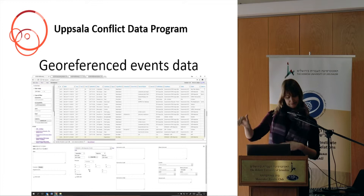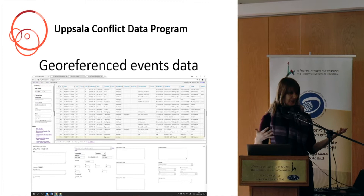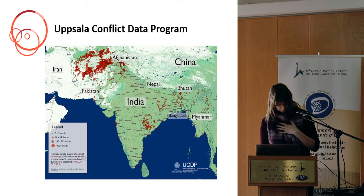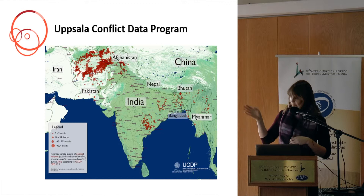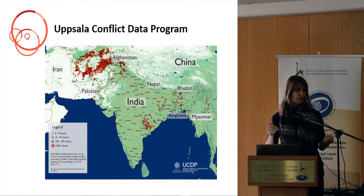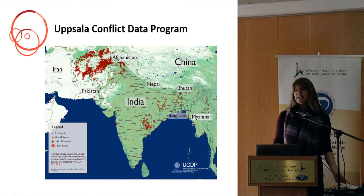This is important in a world where belligerents often make claims that need to be validated. When the coders determine an event has met the criteria for inclusion, they record the information and the number of fatalities, but they also geolocate where it occurred. This allows us to do mapping and allows researchers to analyze what the characteristics are of these places and where violence is taking place.